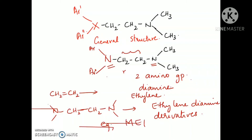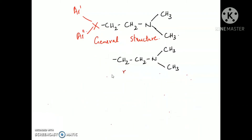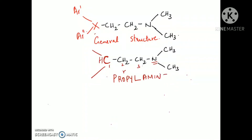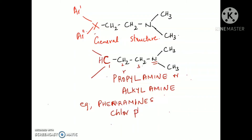If the connecting atom is carbon, you have one more carbon attached to the ethyl chain, so it becomes a three-carbon propyl chain. You will get a propylamine derivative, also called an alkylamine derivative. Examples are pheniramine and chlorpheniramine, which belong to this class.